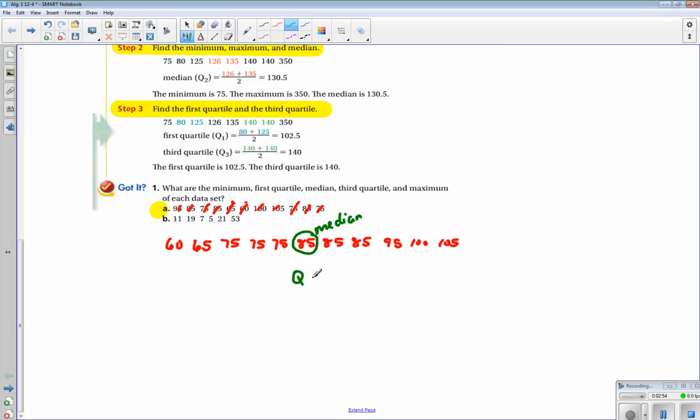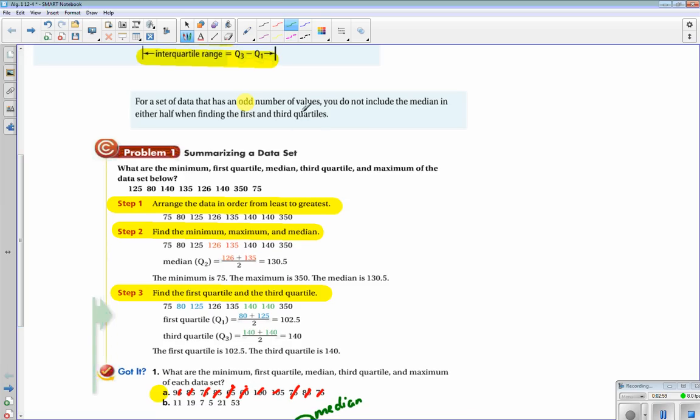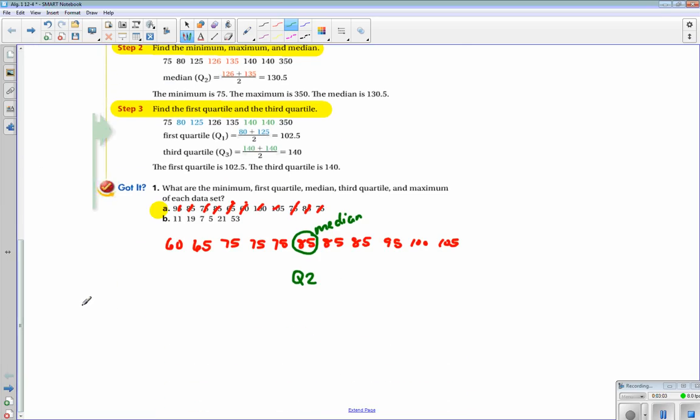As you know, this is quartile two. Our instructions say when you have an odd number of data, you don't include the median in the quartile one and quartile three calculations. So I'm going to find the median of this set of data to either side of my median. When I calculate that, that is my quartile one, and when I calculate it here, this is my quartile three.